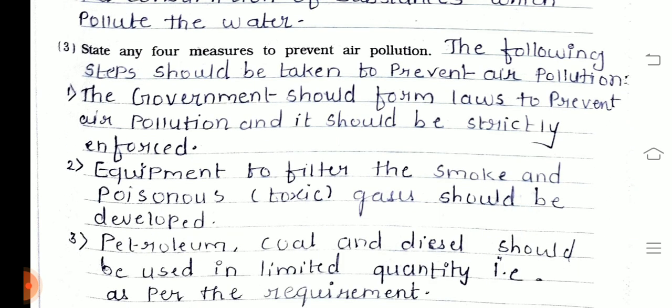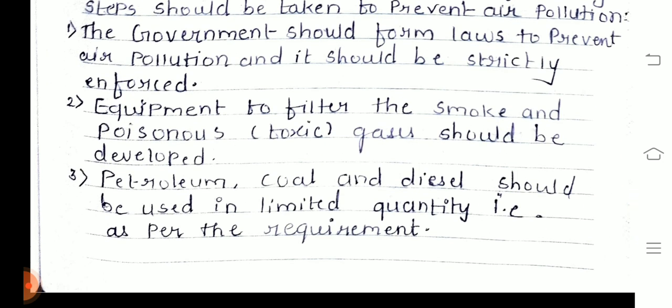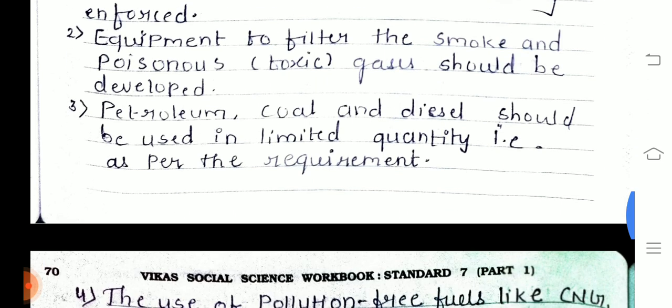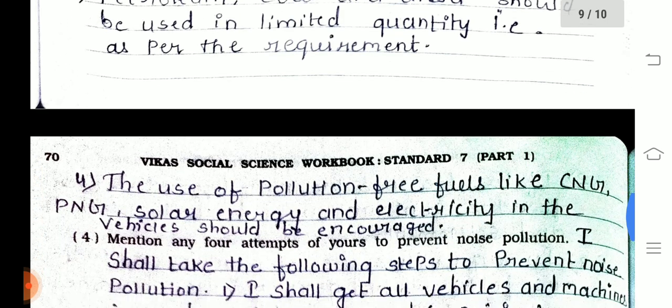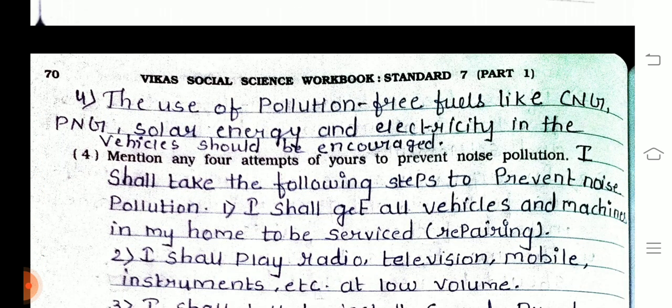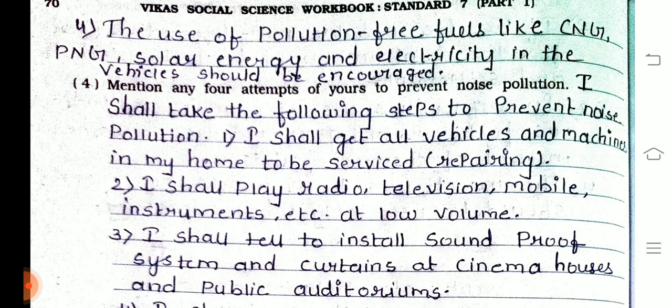Question number three — state any four measures to prevent air pollution. First, the government should form laws to prevent air pollution and strictly enforce them. Second, equipment to filter smoke and poisonous toxic gases should be developed. Third, petroleum, coal, and diesel should be used in limited quantities as per requirement. Fourth, the use of pollution-free fuels like CNG, PNG, solar energy, and electricity in vehicles should be encouraged.